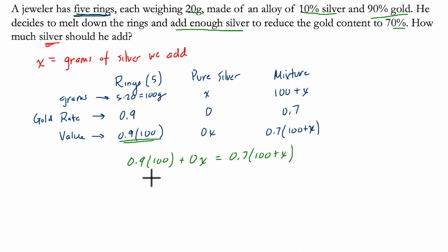So we take 90% of 100. That's just 90. 0X is just 0. And then over here we have 70% of 100, which is 70, 0.7 times X, which is 0.7X. So here we subtract 70 from both sides, and we get 20 equals 0.7X. We divide by 0.7. Now 20 divided by 7 tenths is really 20 times 10 over 7. And that's 200 over 7 equals X.